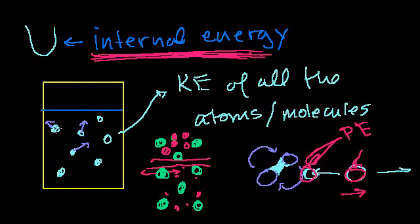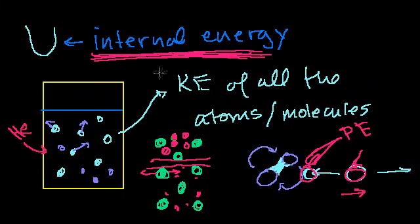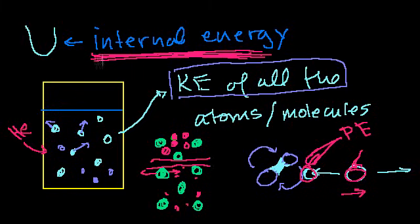So internal energy is literally all of the energy in a system. For most of what we're going to do, you can assume we're dealing with an ideal gas. It becomes a lot more complicated with solids and conductivity and vibrations. We're going to assume we're dealing with a monoatomic ideal gas — maybe helium or neon, one of the noble gases that doesn't want to bond. In that case, the internal energy really simplifies to just the kinetic energy. But it's important to realize: internal energy is everything — all of the energy inside of the system.